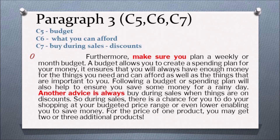Paragraph 3 covers C5 budget, C6 what you can afford, and C7 buy during sales with discounts. The paragraph reads: 'Furthermore, make sure you plan a weekly or monthly budget. A budget allows you to create a spending plan for your money. It ensures that you will always have enough money for the things you need and can afford, as well as the things that are important to you. Following a budget or spending plan will also help to ensure you save some money for a rainy day. Another advice is to always buy during sales when things are on discount. During sales, there is a chance for you to do your shopping at your budgeted price range or even lower, enabling you to save money. For the price of one product, you may get two or three additional products.'